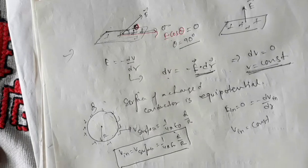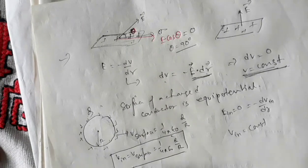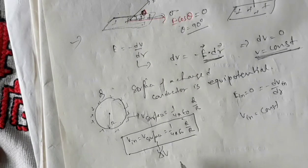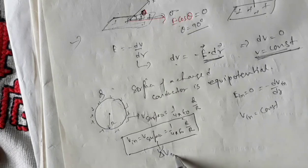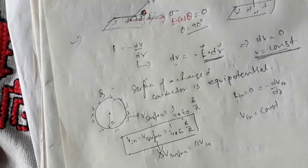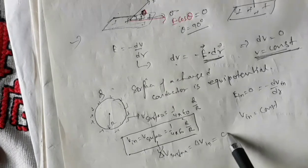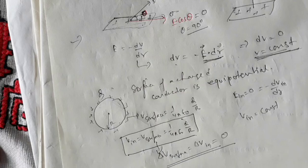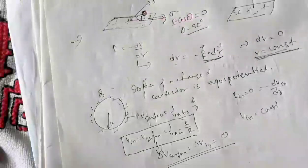Therefore, the potential difference on the surface and inside this charged conductor is zero. Whether you find the potential difference inside or on the surface of the conductor, it will always be zero, because the potential is the same throughout — both inside and on the surface of the conductor.